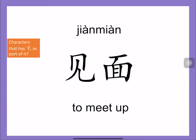Can you think of any characters that have 见 as part of them? We know 见 is part of the word 再见, because 见 means 'to see' and 再 means 'again', so 再见 is 'see again'. And 见 is also in the word 电视, meaning TV. 视 means vision — it makes sense because 见 means to see. And 电 means electric, so 电视 is television.